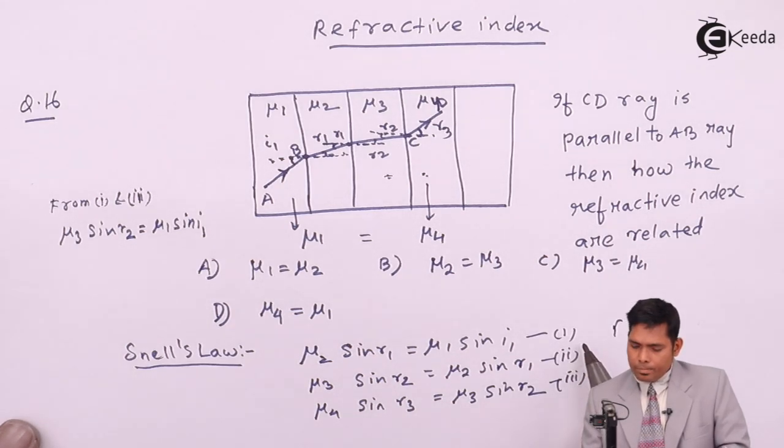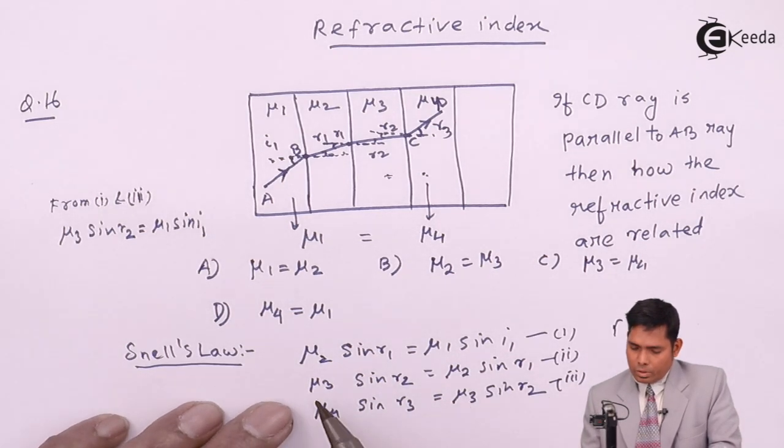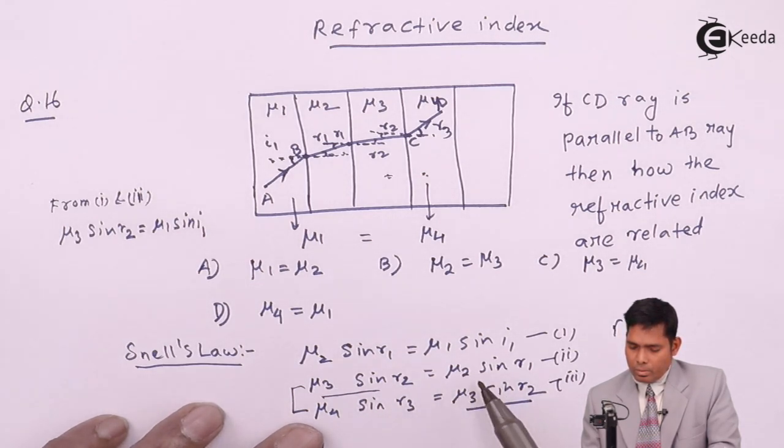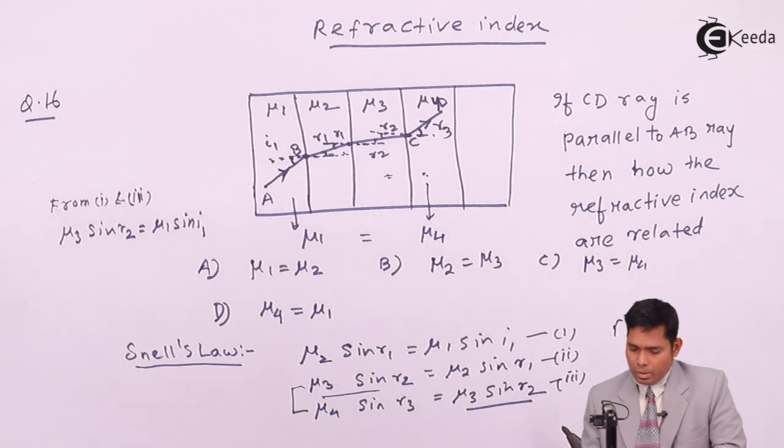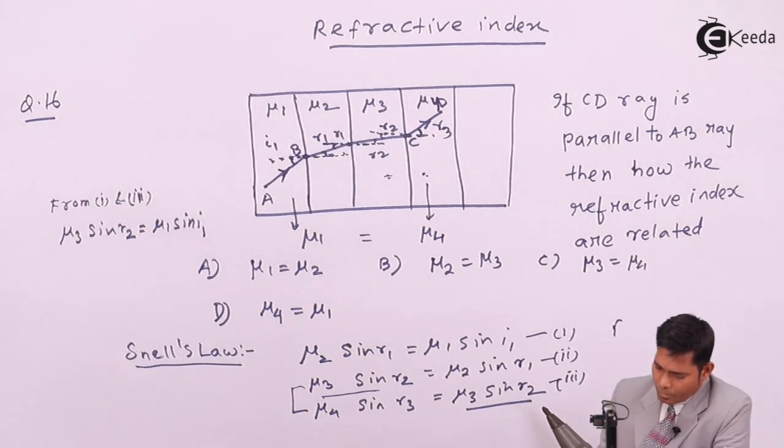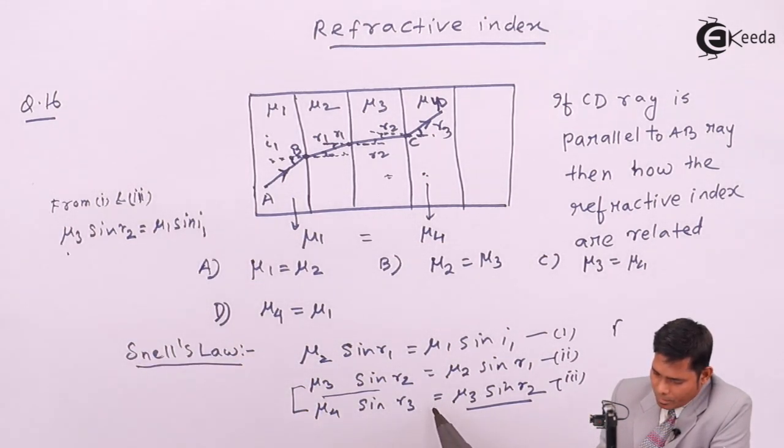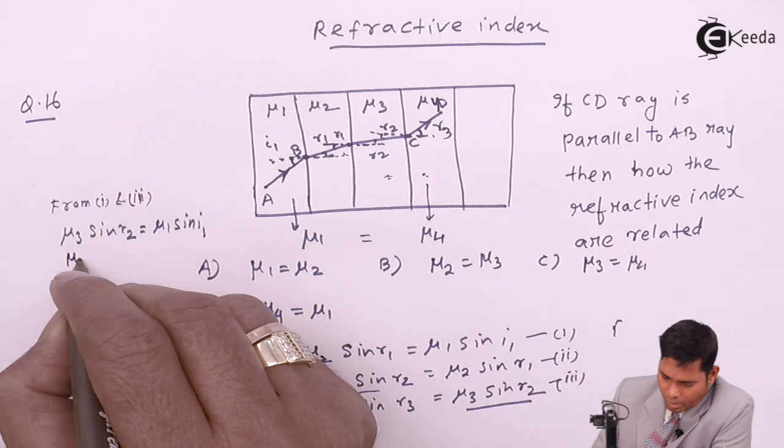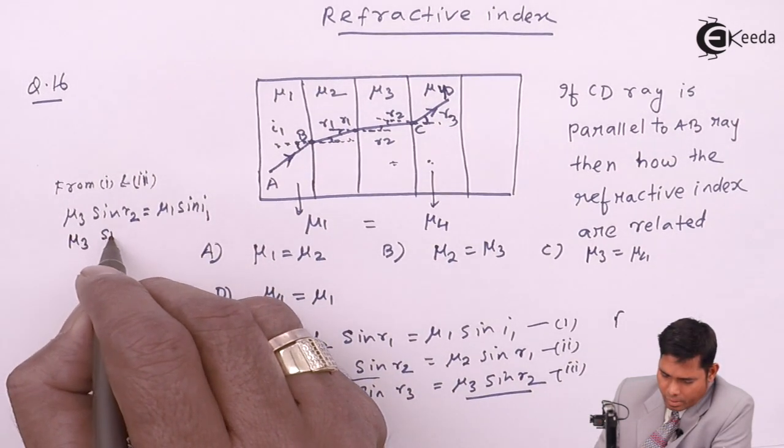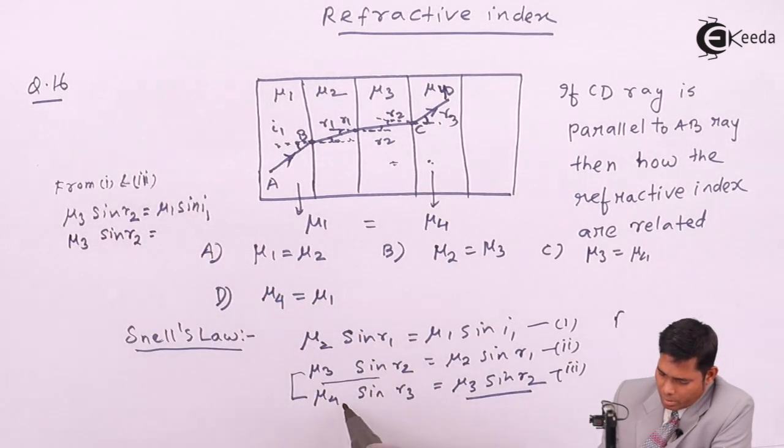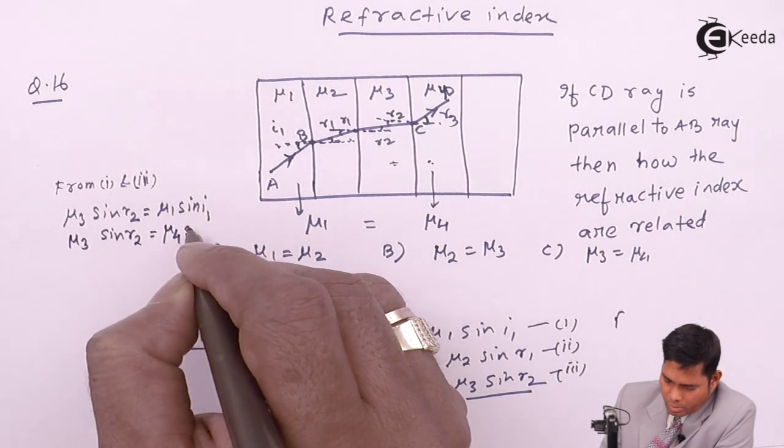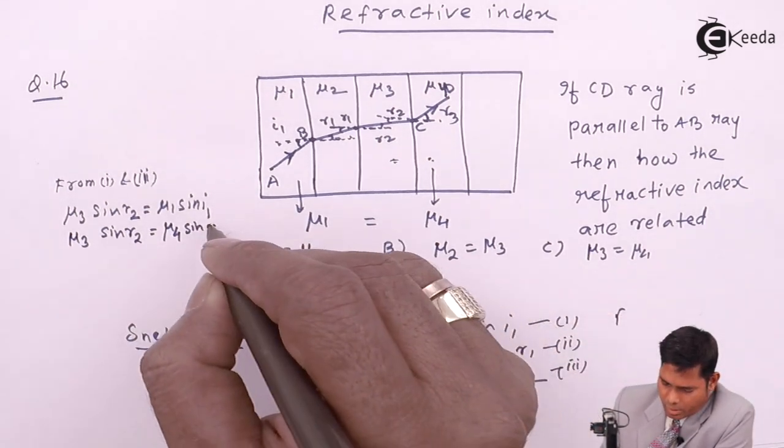Similarly, from these two equations, this part and this part same. So, these two will be equal. So, I will write that here also. This equation, mu3 sine r2. I will write this equation 3 here. mu3 sine r2 is mu4 sine r3.